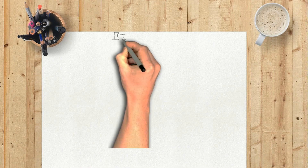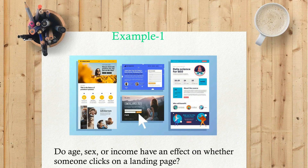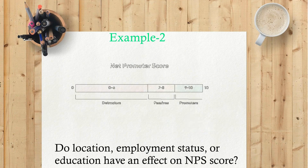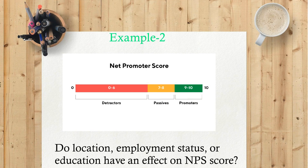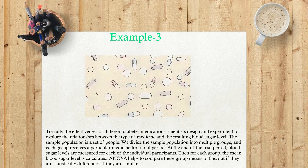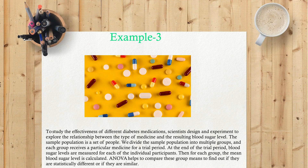Examples of ANOVA. Example 1: Do age, sex, or income have an effect on whether someone clicks on a landing page? Example 2: Do location, employment status, or education have an effect on NPS score? Example 3: To study the effectiveness of different diabetes medications, scientists design an experiment to explore the relationship between the type of medicine and the resulting blood sugar level. The sample population is divided into multiple groups, each group receives a particular medicine for a trial period. At the end of the trial period, blood sugar levels are measured for each of the individual participants, then for each group the mean blood sugar level is calculated. ANOVA helps to compare these group means to find out if they are statistically different or if they are similar.